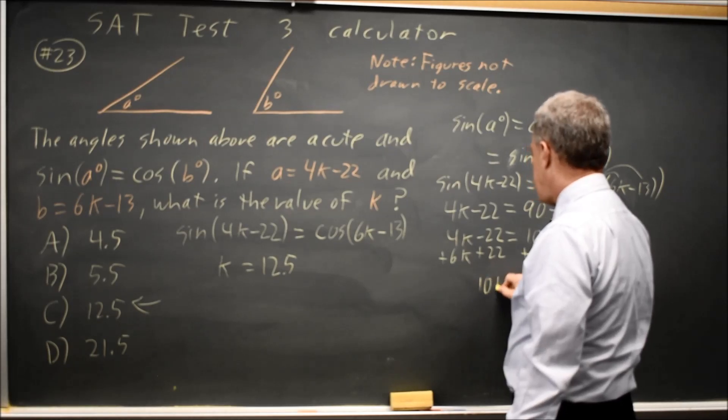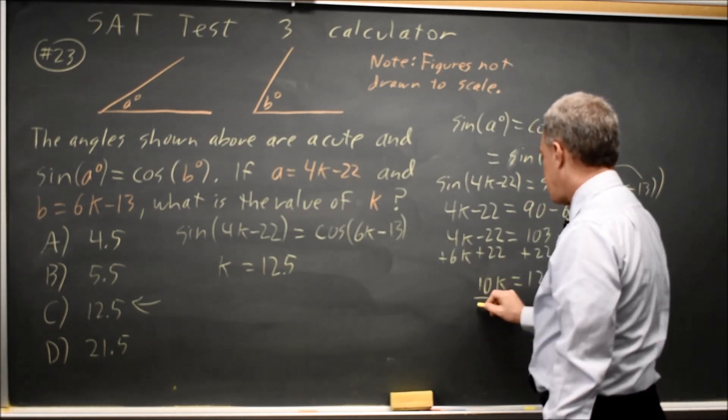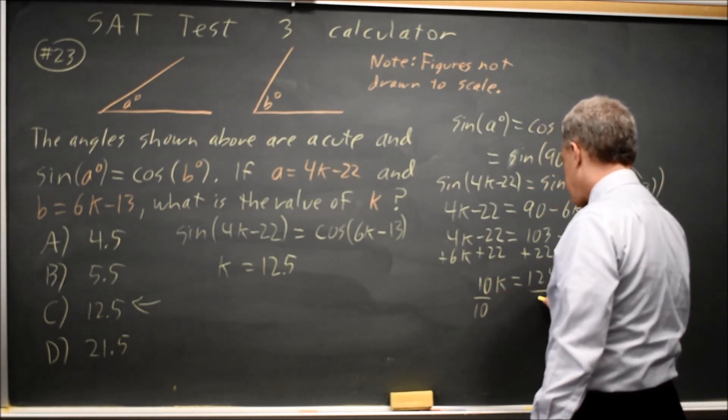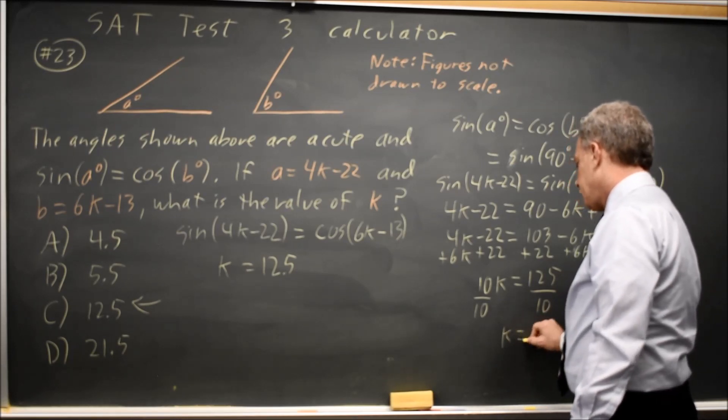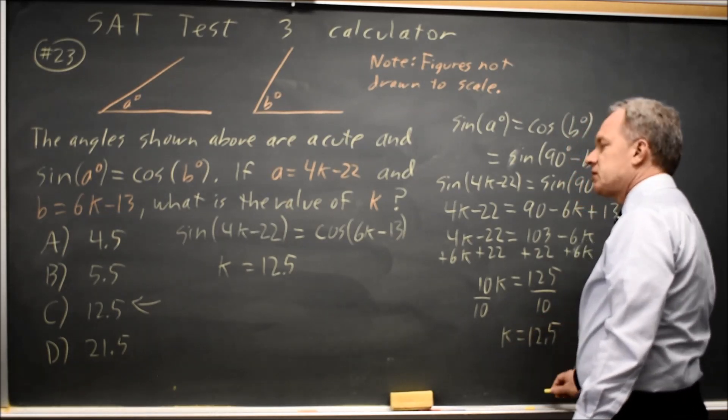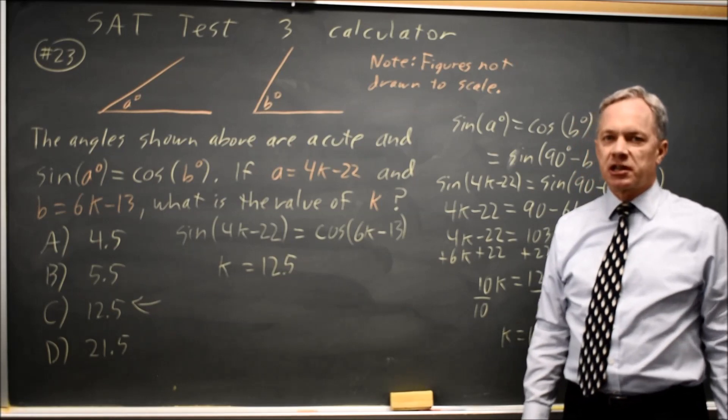And I get 10k on the left equals 125. Dividing by 10, I get k equals 12.5, which is the same answer as I got in the calculator.